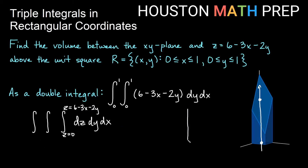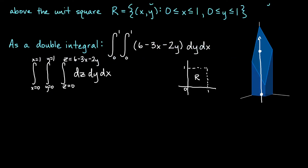Now we continue as we did before and think about our region in the plane in terms of x and y — back to the idea of a double integral. We have a double integral dy dx on the outside of what we've already done. From 0 to 1 in each direction, this is our region R in the plane. Our y bounds go from 0 to 1, and our x bounds go from 0 to 1. So we can write the full triple integral as the integral from 0 to 1, 0 to 1, and 0 to 6 minus 3x minus 2y, integrating dz dy dx.